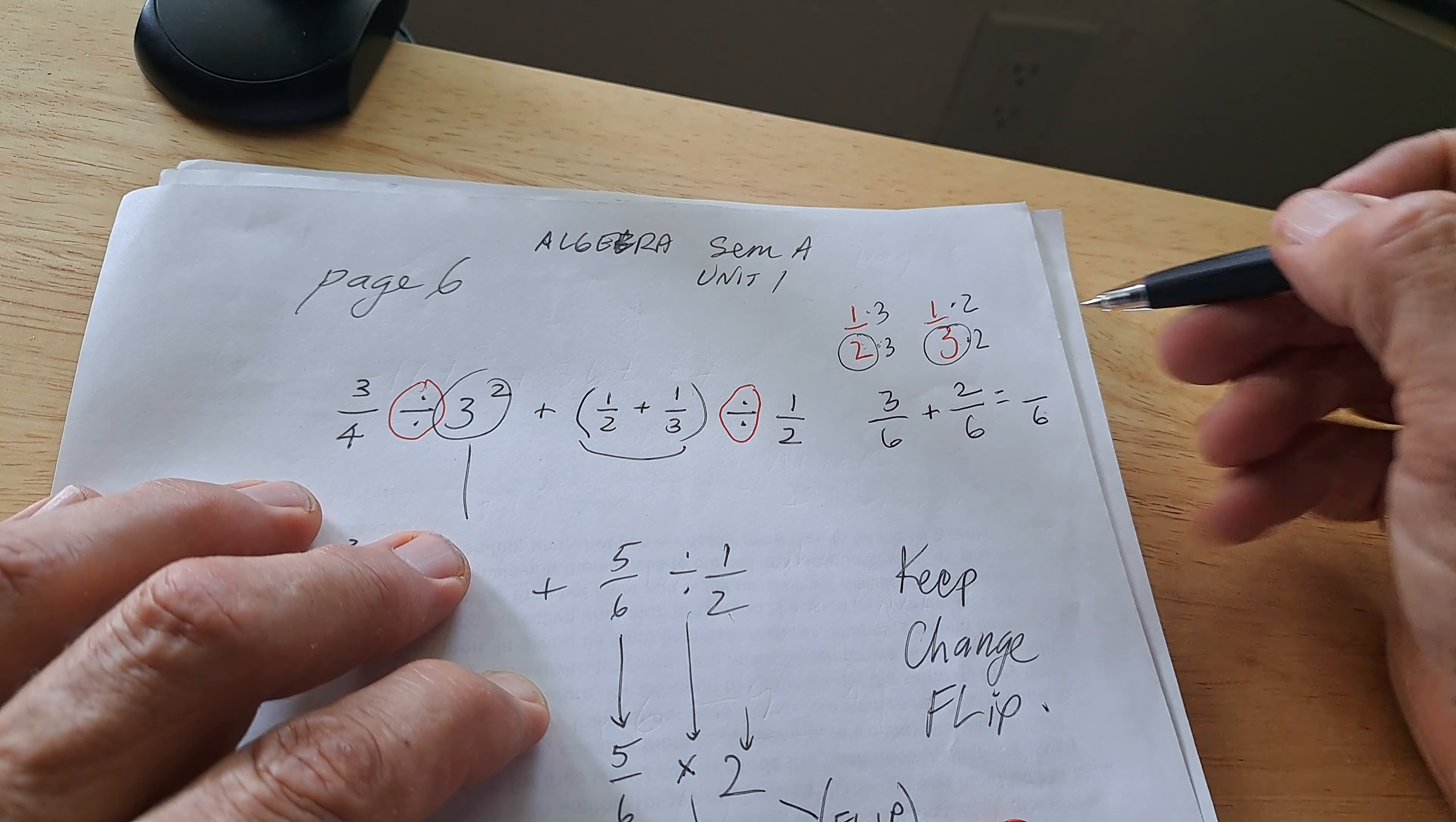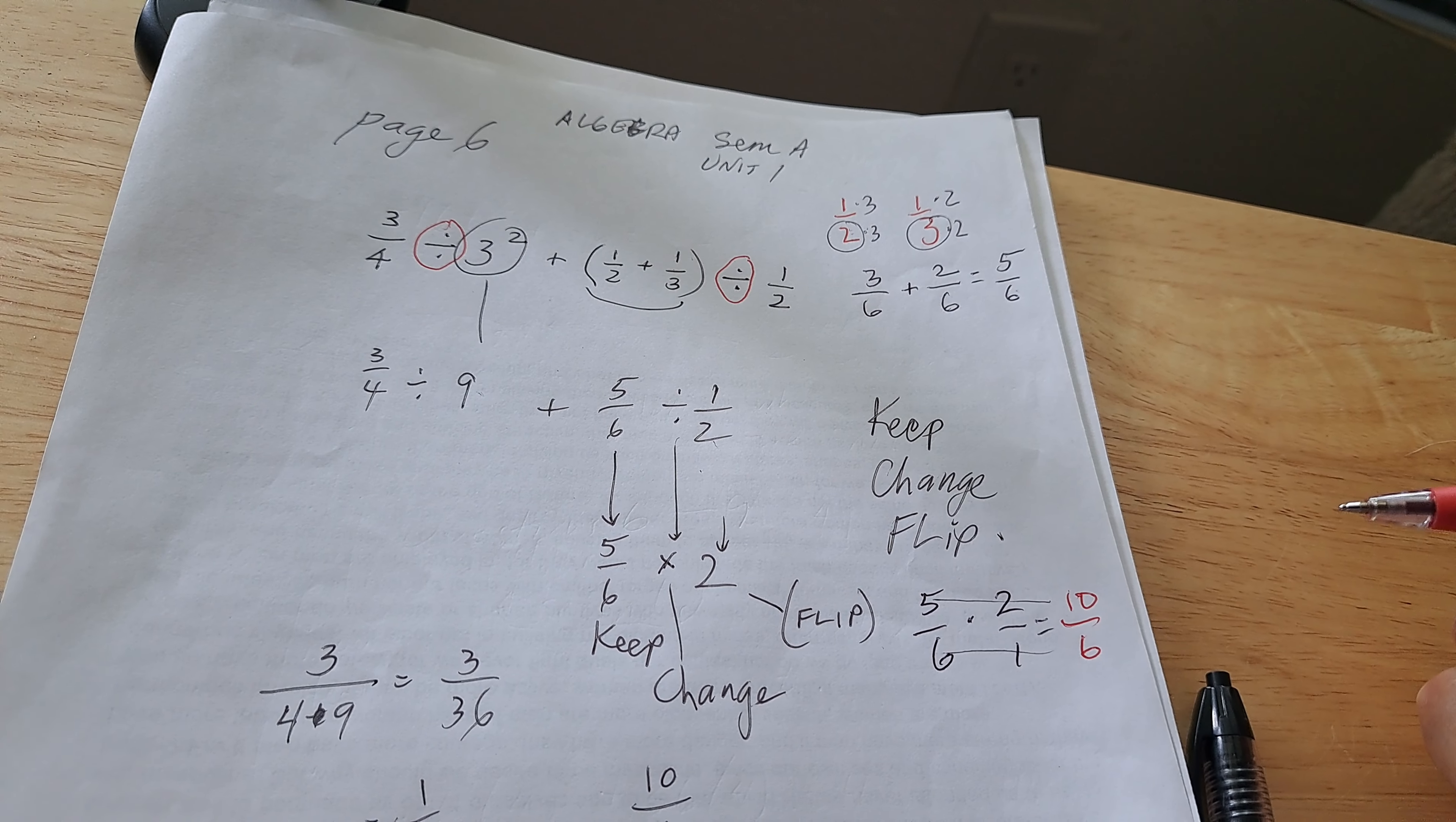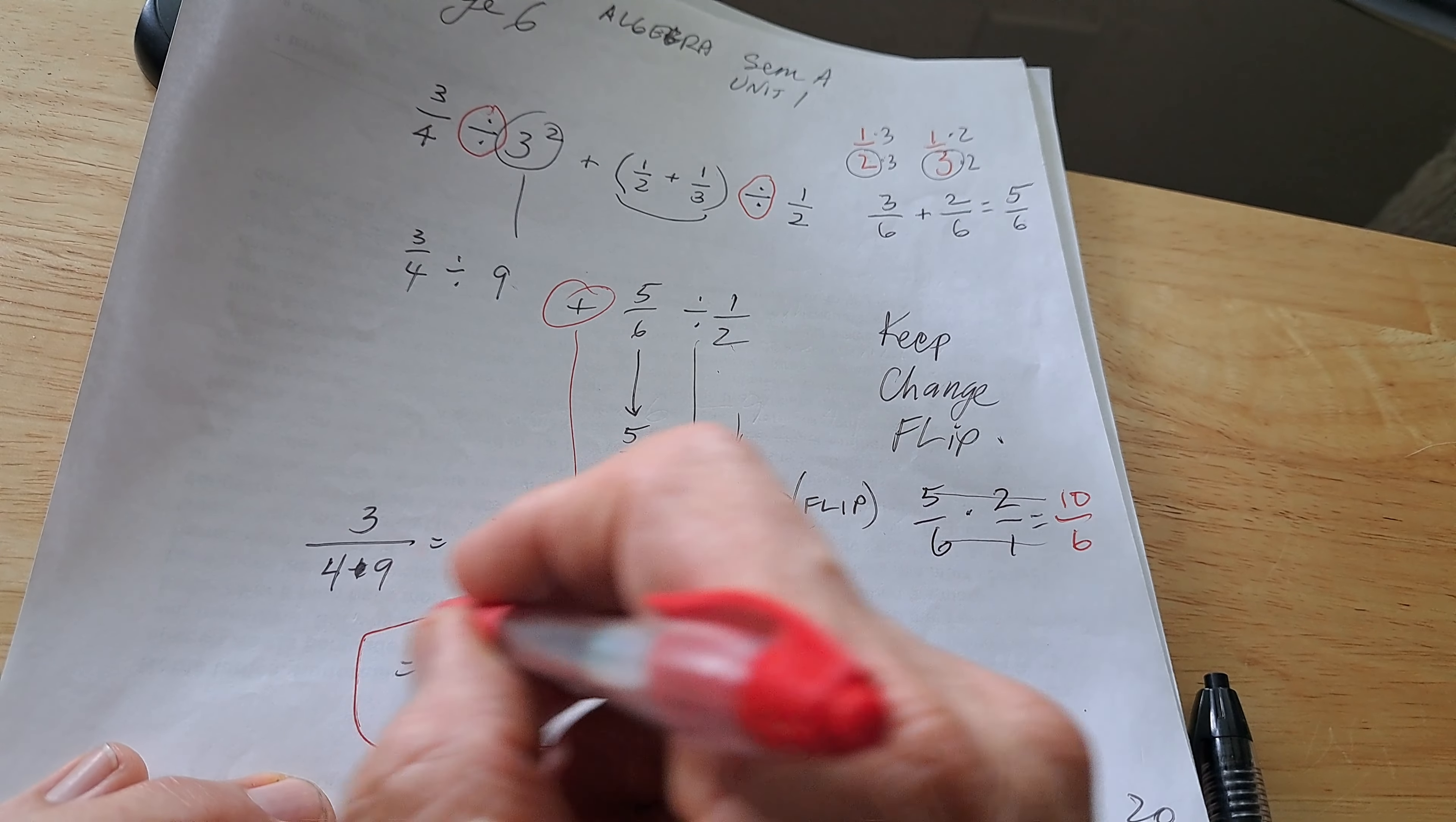So 9s, we're going to be dividing this into 9 little pieces. We're going to do the keep, change, flip. So this guy's keep, we change the divide to times, and we're going to flip him over. So when you flip, it's going to be 5 over 6 times 2 over 1. And you go straight across, so you have a 10 on the top and a 6 on the bottom. And that's how we got down here.